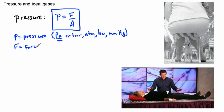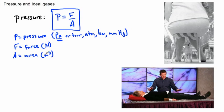F is a force — written in Newtons — and A is the area, the surface area that the force is spread out over, in meters squared. You take your force, divide it by an area, and there you get the definition of pressure.